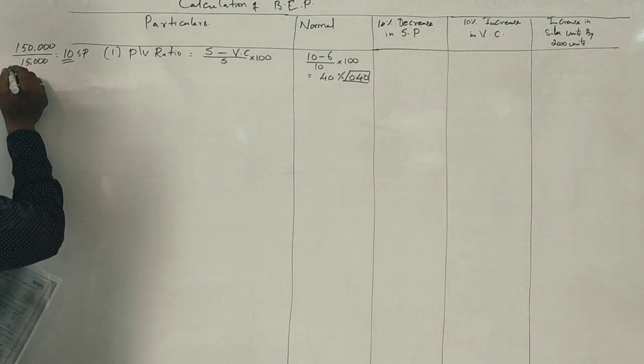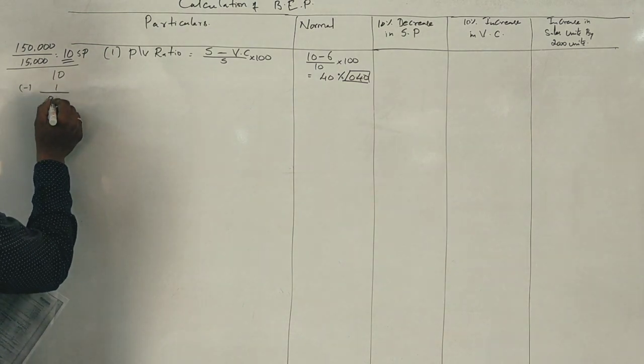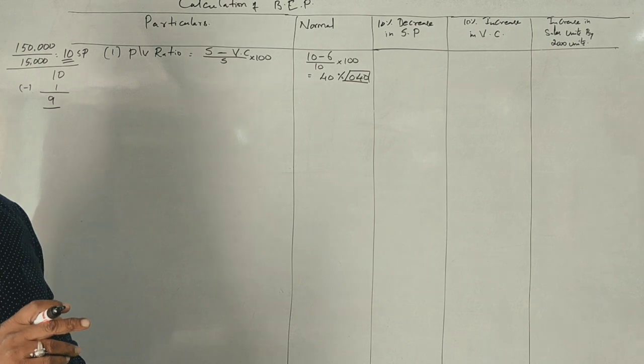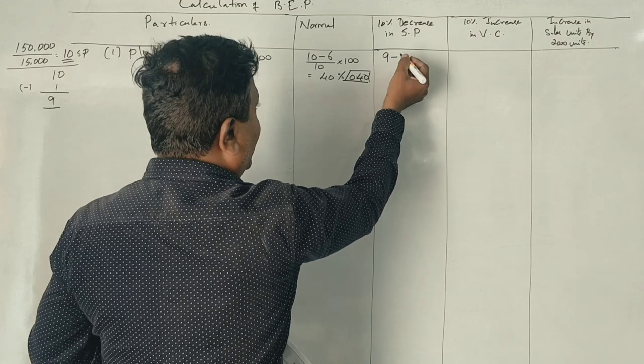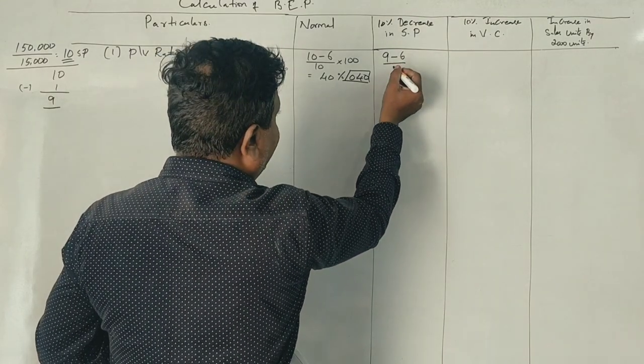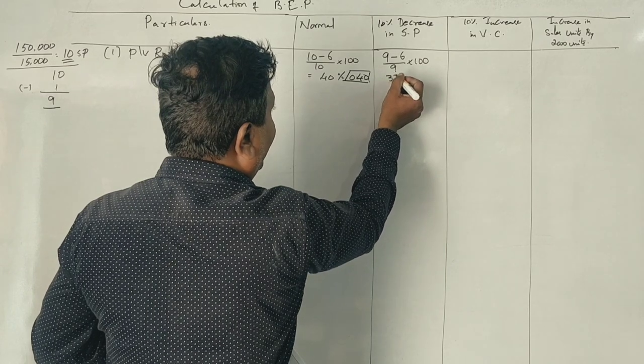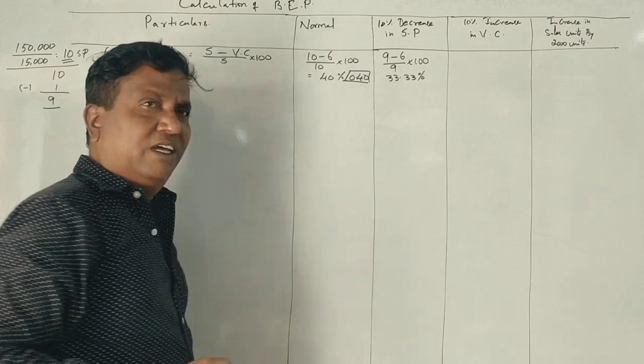If you calculate, selling price is 10 rupees, variable cost is 6 rupees. 10 minus 6 divided by 10 into 100 equals 40%. The PV ratio is 40%.